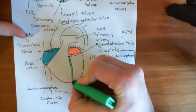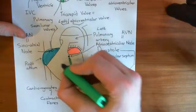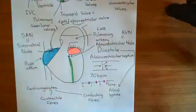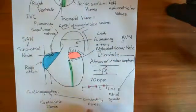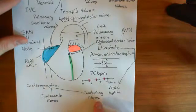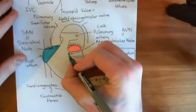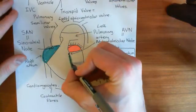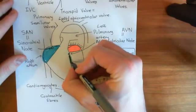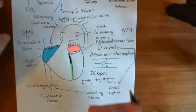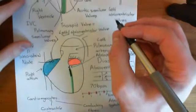In the wall between the right ventricle and the left ventricle — the ventricular septum — there are cardiomyocytes which are not contractile. Instead, they are conducting cardiomyocytes, assembled into a bundle that spreads down this septum between the two ventricles. This is called the ventricular septum.